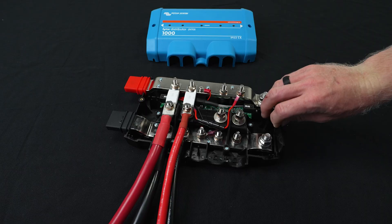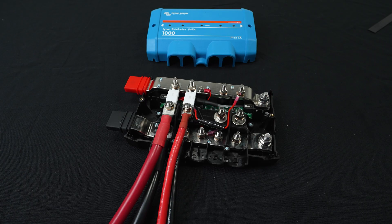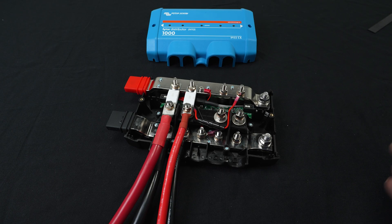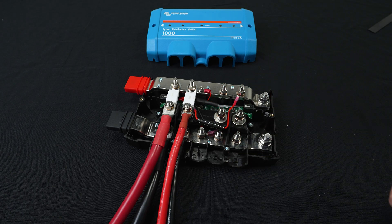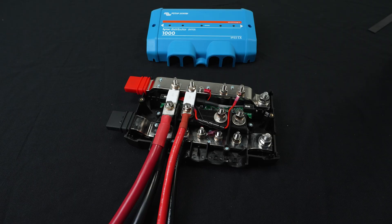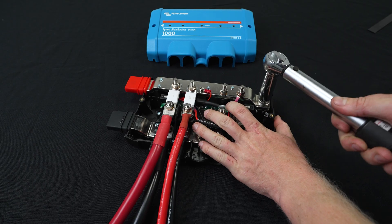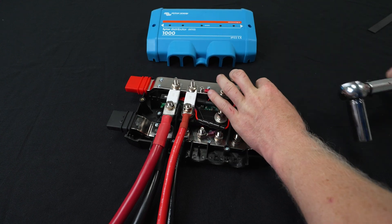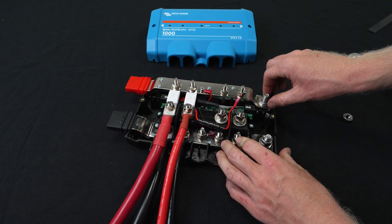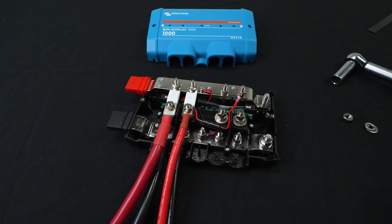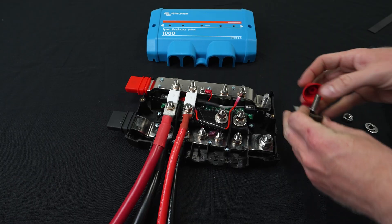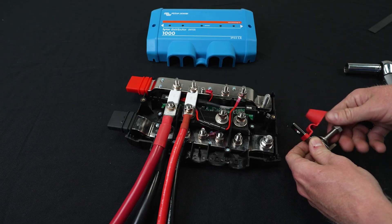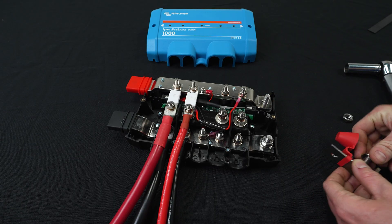First thing we'll do is remove the plastic separator. And although we were using a 13 millimeter socket for these connections, we're going to use a 17 millimeter for the two on the sides. So for today's example, I'm just going to use the single MRBF holder and I'll put a 125 amp fuse in there.